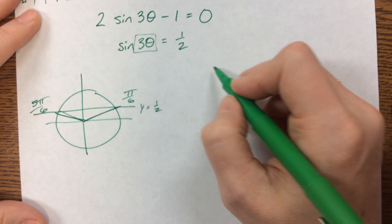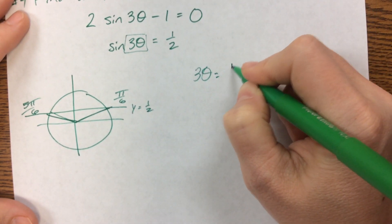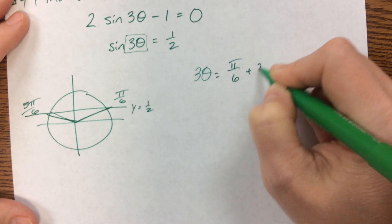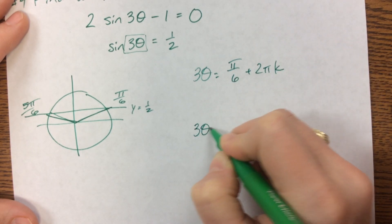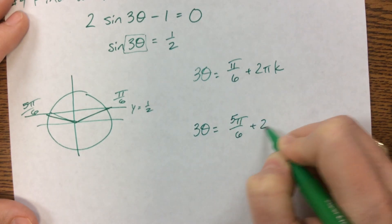So what we have is we found that 3 theta is either equal to pi over 6 plus 2 pi k, or 3 theta is equal to 5 pi over 6 plus 2 pi k.